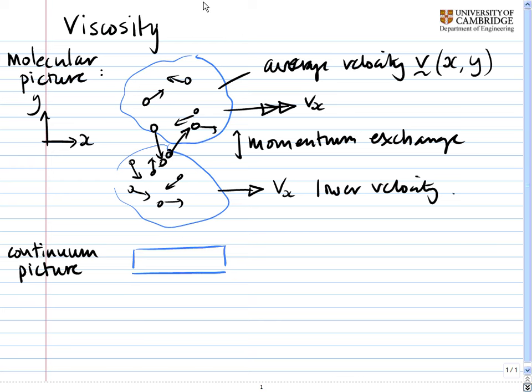But let's imagine one layer of fluid and it's moving at the top velocity vx which is high. That's this velocity up here at the top layer of molecules.